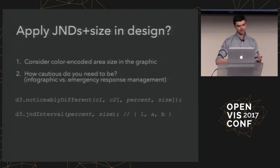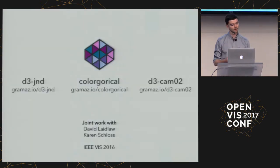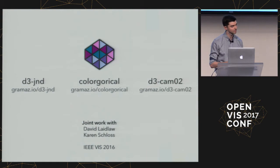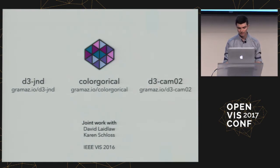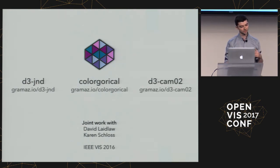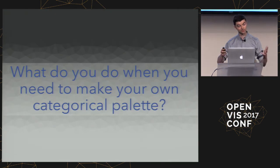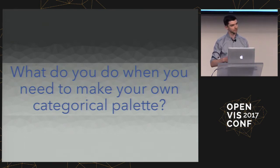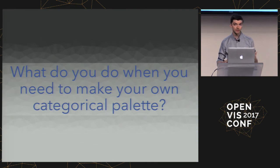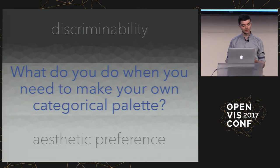Moving on to a tool called Colorgorical, which is joint work with David Laidlaw, my PhD advisor, and Karen Schloss, a color perception researcher at the University of Wisconsin-Madison. Just as with D3 JND, I want to lead with a broad question: what do you do when you need to make your own categorical color palette? It's very situation-dependent and has a whole lot of different constraints.